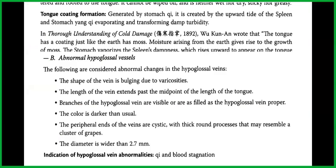Let's talk about tongue coating formation. Generated by stomach chi, it is created by the upward tide of the spleen and stomach yang chi, evaporating and transforming damp turbidity. In 'Thorough Understanding of Cold Damage,' Wu Kun'an wrote that the tongue has a coating just like the earth has moss. Moisture arising from the earth gives rise to the growth of moss; the stomach vaporizes the spleen's dampness, which rises upward to appear on the tongue.